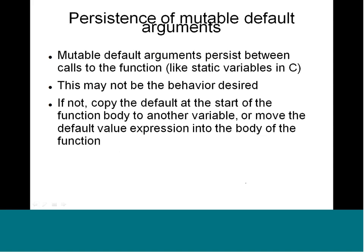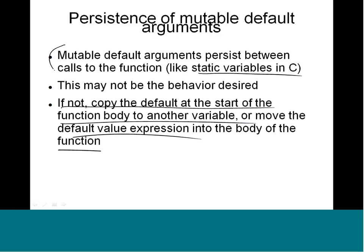One final topic: the persistence of mutable default arguments. Default arguments that are mutable persist between function calls — they behave like static variables. This may not be the behavior we want. To avoid this, we need to copy the default value at the start of the function body to another variable, or move the default value expression into the body of the function. This is an important quirk of Python to be aware of.